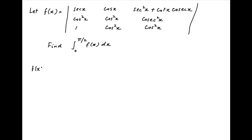We start with a couple of row operations on the given determinant which defines f(x). The first row operation is to replace R1 with R1 minus sec(x) times R3. The second row operation is to replace R2, the second row, with R2 minus cos²(x) times R3.